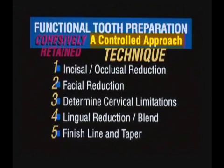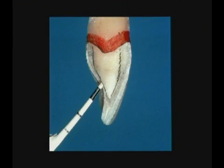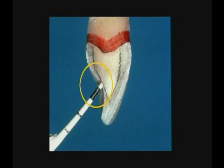If we have a controlled approach, the process will make the result automatic. As we move around to the lingual surface, the critical area on the lingual surface requires not only the reduction requirements of 1 to 1.5 millimeters, but a concavity so that the appropriate angle of guidance can be developed in the final restoration.